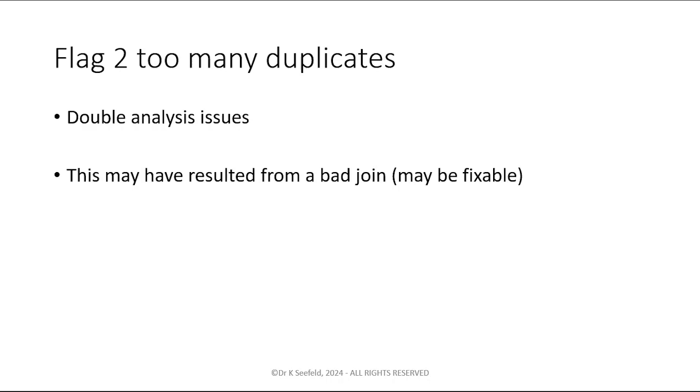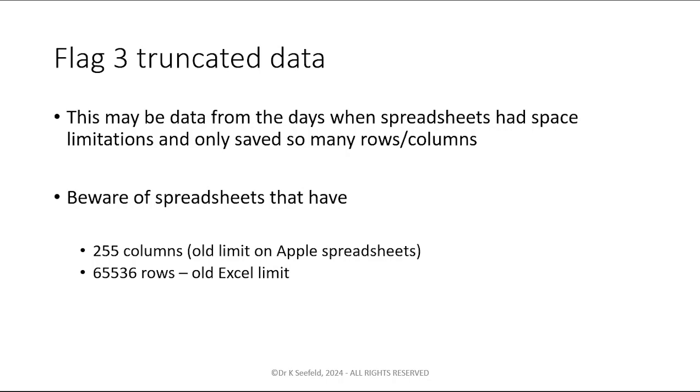A lot of duplicates: this may result from a bad join. When you join data, it's entirely possible that what you do in your join is you accidentally create a bunch of duplicates. This actually may be something that's fixable, but too many duplicates will result in double counting and triple counting things and just a big mess. Another issue is truncated data. I don't know the exact time frame when this ended, but apparently the old Apple spreadsheets only had 255 columns as a limit, which might sound wonderful, but if you actually had 500 columns of data, that meant that half your data was basically lost.